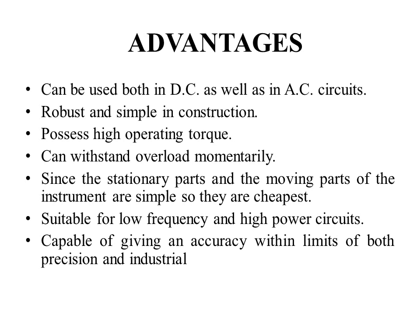The advantages of moving iron instruments are: they can be used in both AC and DC circuits; their construction is very simple and robust; the operating torque of MI instruments is very high and they can withstand overloads momentarily; they are cheap compared to permanent magnet moving coil (PMMC) instruments; and they are suitable for low frequency and high power circuits.